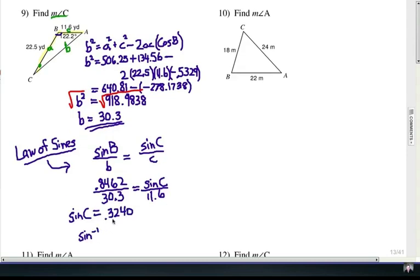And that's .3240, that's rounded. Notice that that's these two numbers multiplied, divide it by the third number, cross multiplication.